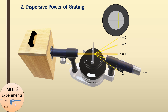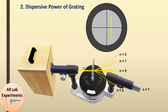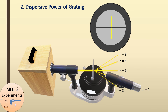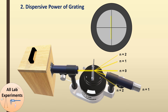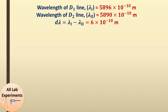To find the dispersive power, we use the sodium lamp and look carefully at its yellow light. If you look carefully, you will find that it is actually two closely spaced lines — a double line. Move your telescope and place the cross wire just above the first line and note its position. Then move the cross wire to the second line and measure its position. The wavelengths of the two sodium D-lines are 5896 Å and 5890 Å, so we can calculate the dλ quantity by subtracting them.